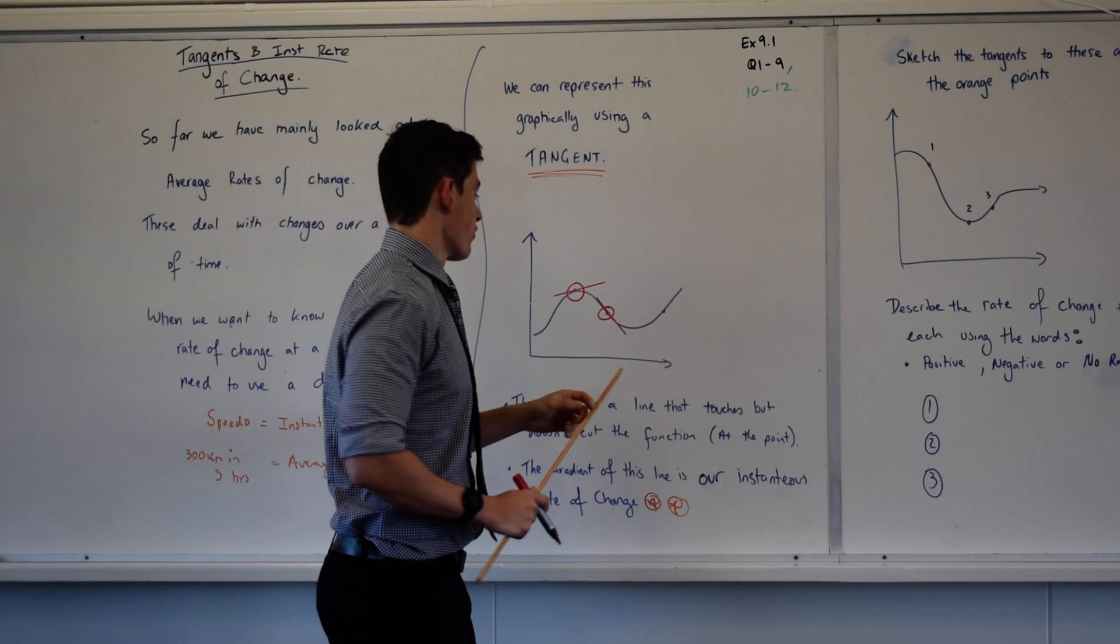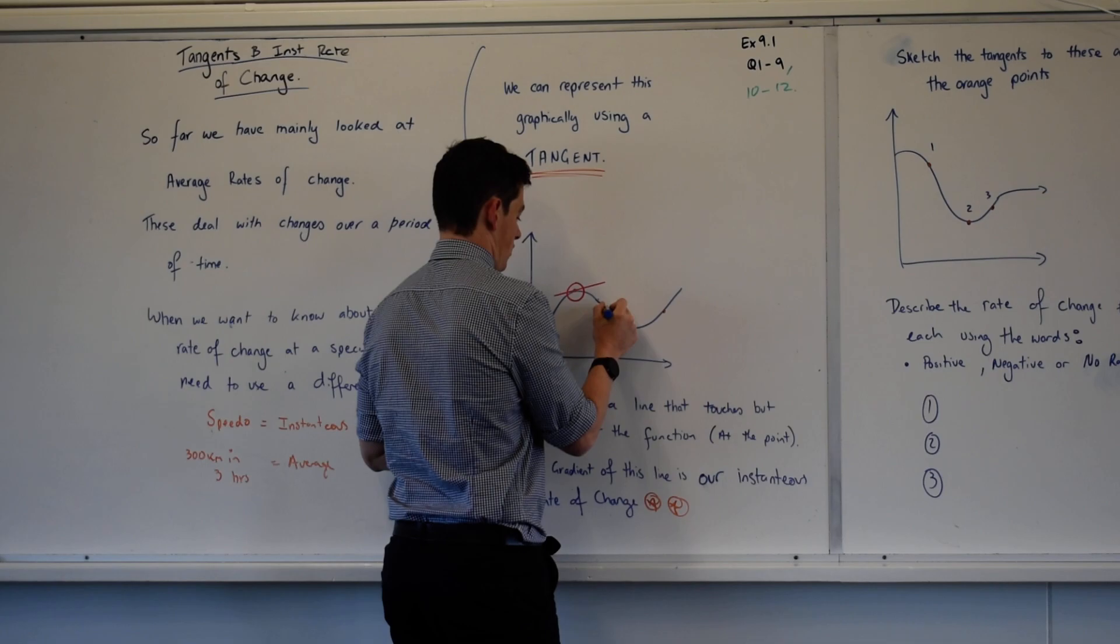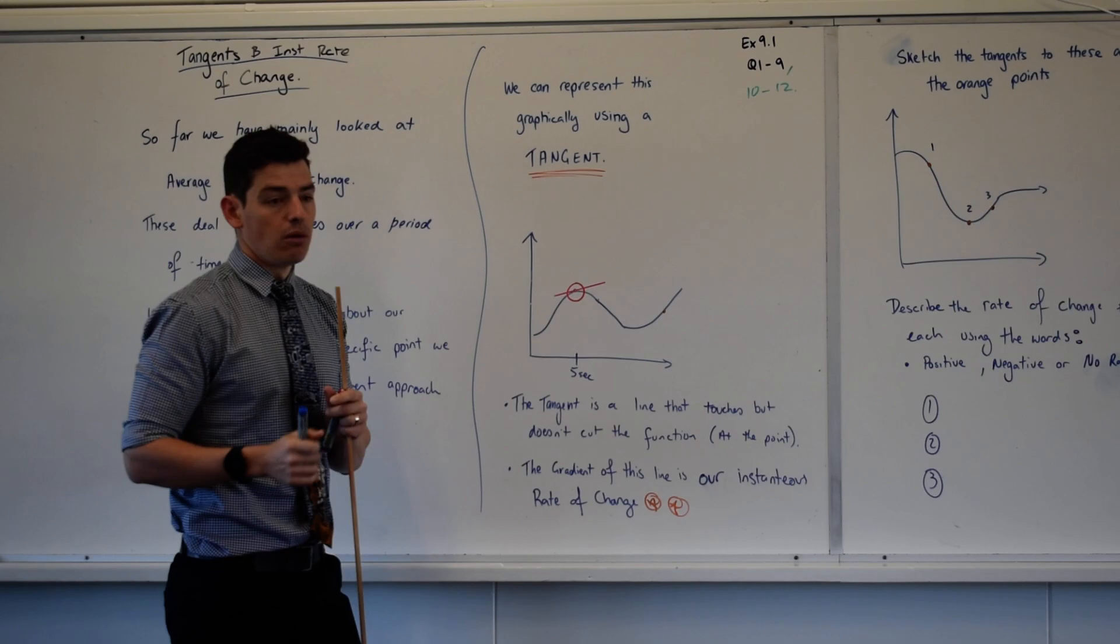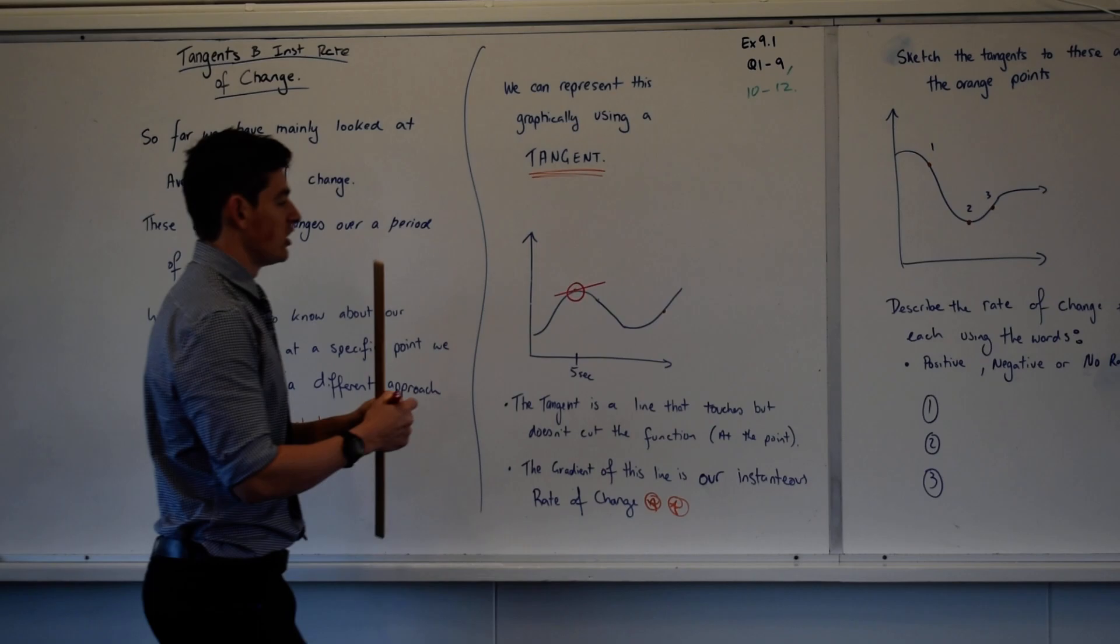The gradient of the tangent, so the gradient of this line here, I'm just going to get rid of one of these lines so I'm not confusing here. The gradient of my red line, say this is at 0.5 seconds, the gradient of my red line will tell me my instantaneous rate of change at 5 seconds. Does that make sense?